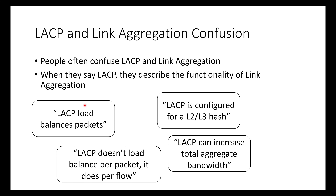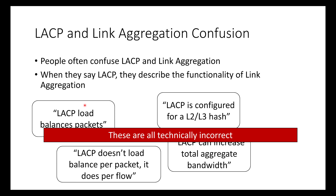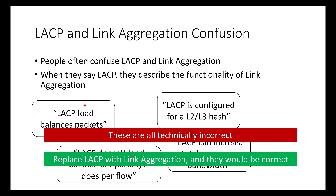When people say things like 'LACP load balances packets,' 'LACP is configured for a layer two/layer three hash,' 'LACP can increase total aggregate bandwidth,' 'LACP doesn't load balance per packet, it does per flow' — that's all incorrect. None of those statements are correct, and those are things I see online all the time. If you replaced LACP with link aggregation, they would be correct, because that's actually what link aggregation does.